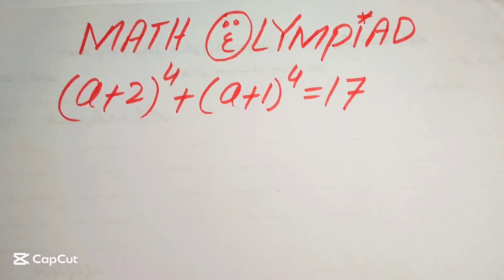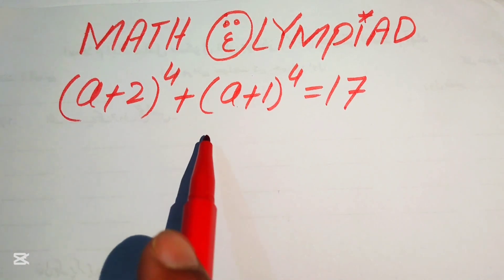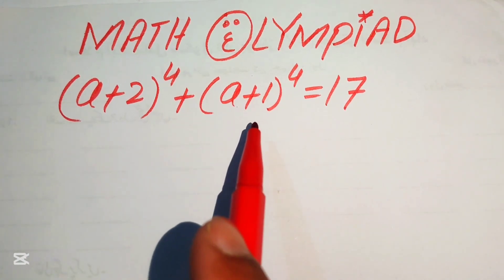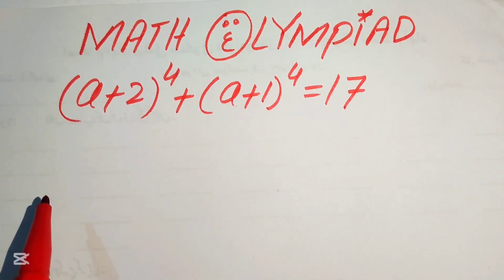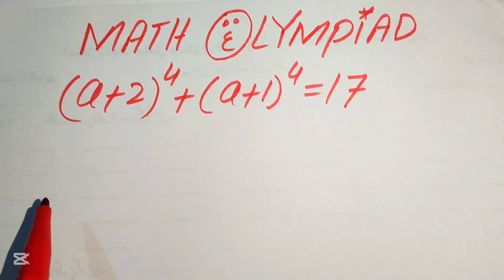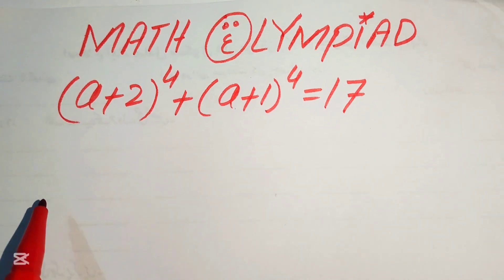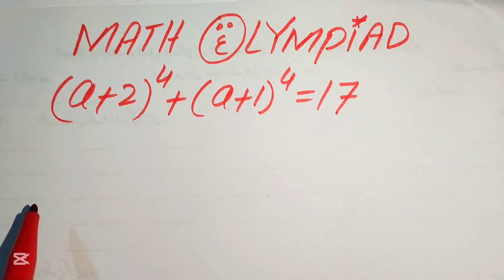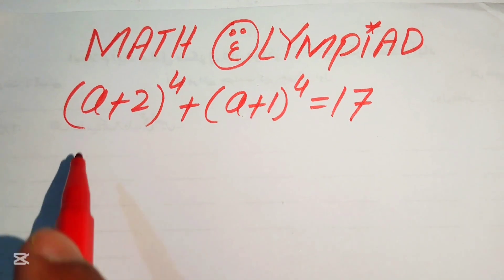Hello everyone, welcome. We will solve this nice algebra problem: (a+2)⁴ + (a+1)⁴ = 17, and we'll solve for the values of a. I'll introduce a very unique and different method, so please watch this video to the end.